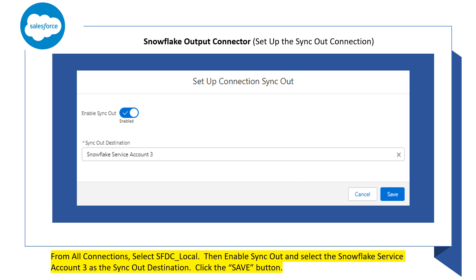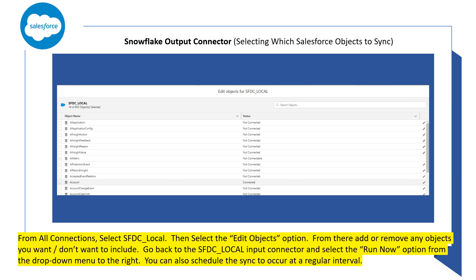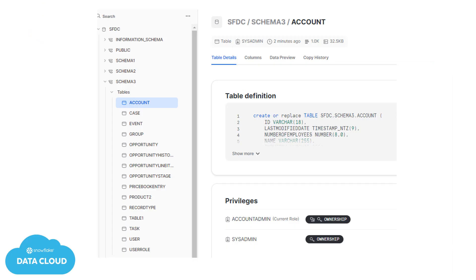Enable the sync out and select service account three as the sync out destination, then click the save button. Next, you'll be selecting which Salesforce objects you want to sync from Salesforce to Snowflake. Then go back to the SFDC local input connector and select the run now option from the drop-down menu to the right. Alternatively, you can schedule the sync to occur at a regular interval. Now this is really cool — go back to Snowflake and you'll see that all the tables and columns needed for the sync were created for you and the Salesforce data has been inserted into Snowflake.